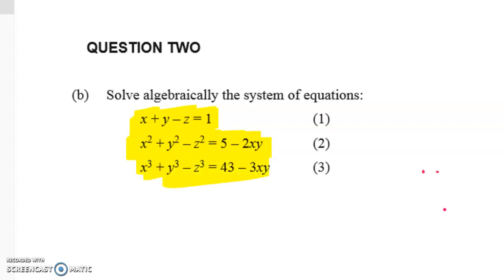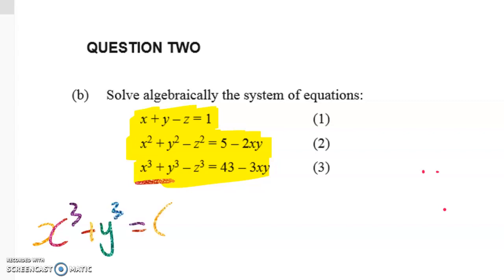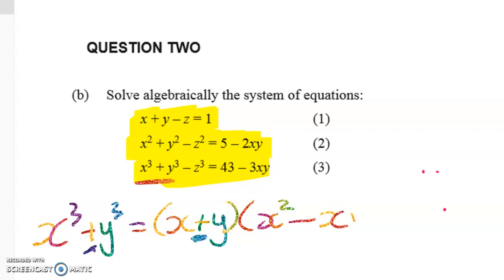Suppose you have a look at these three equations in yellow and see that you've got x, y and z. You might immediately think that we're probably going to use the sum of two cubes in here. To factorize the sum of two cubes we're going to use the acronym SOAP. Same sign, opposite, always positive.